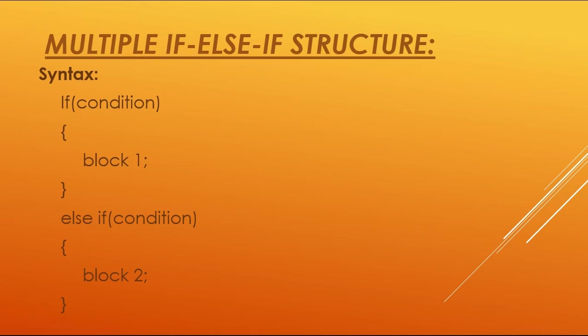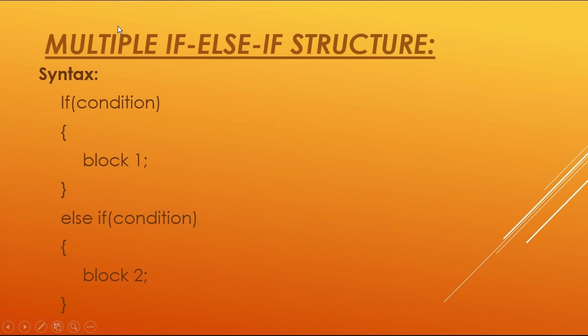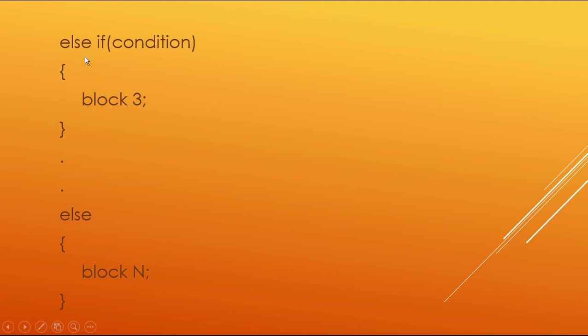We can use different if and else-if structures in our program — that is actually called multiple if-else-if structure. Using multiple if and else-if structures in your program is called a multiple if-else-if structure. We use if first, then else-if which executes the second block, and then again else-if with a different condition.